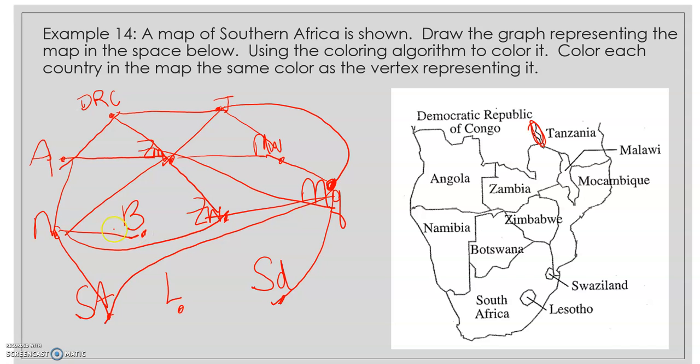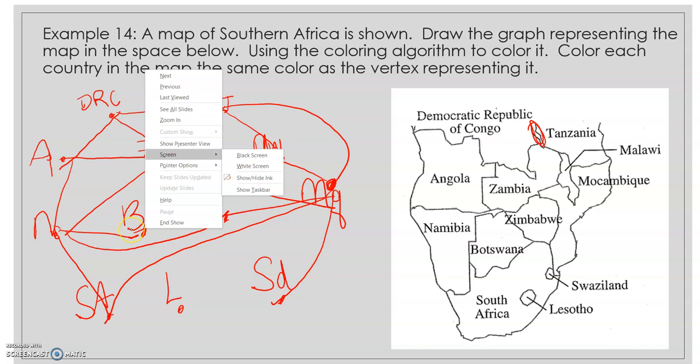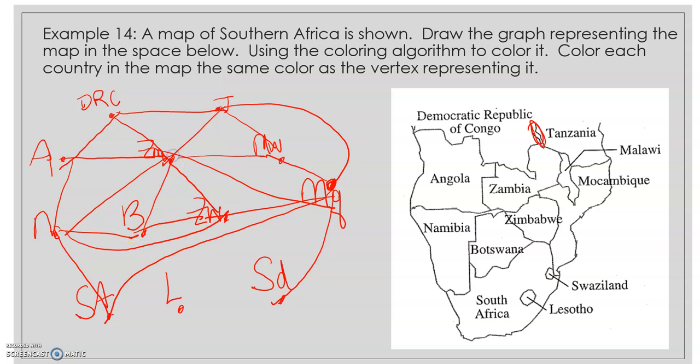Botswana touches Namibia, Zimbabwe, Zambia, and South Africa. Lesotho touches South Africa. Swaziland touches Mozambique and South Africa. I think we have them all.